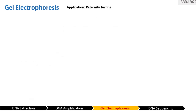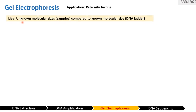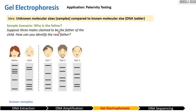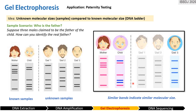Paternity testing is one application of gel electrophoresis. The idea is to compare genetic material to a known molecular size using a DNA ladder as reference. In this scenario, known samples come from the mother and a child. Since an offspring receives 50% genetic material from each parent, the resulting bands of the child should be a combination of both parents. The person whose genetic material matches the mother's and child's bands is the father — this application is also called DNA fingerprinting.